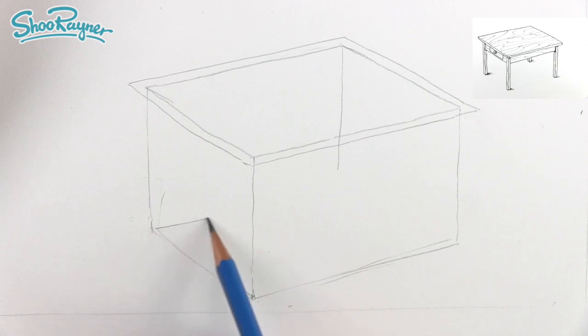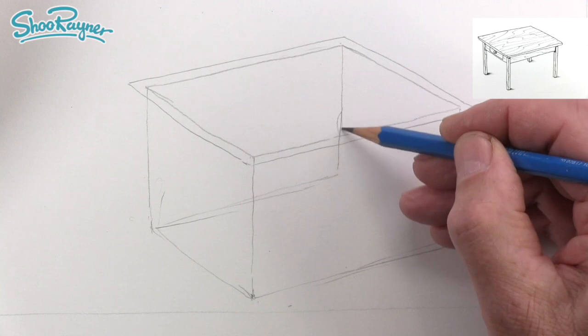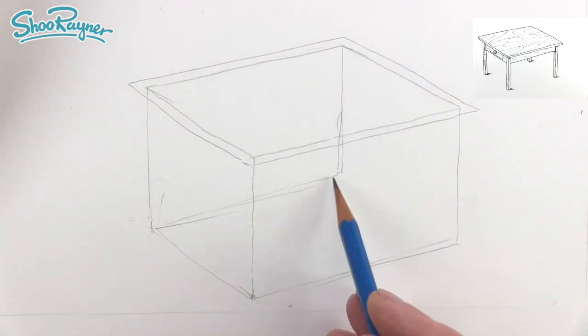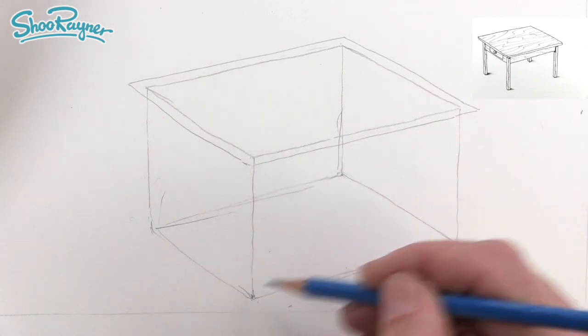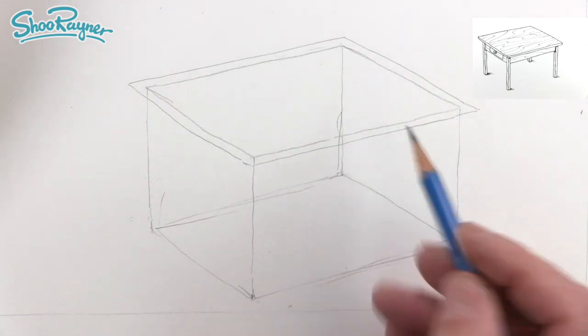Now we want to draw another line parallel to that, just going across there which will join up with this vertical line coming down there, and then we'll join up those two lines there. So these will be the legs and this is the top.